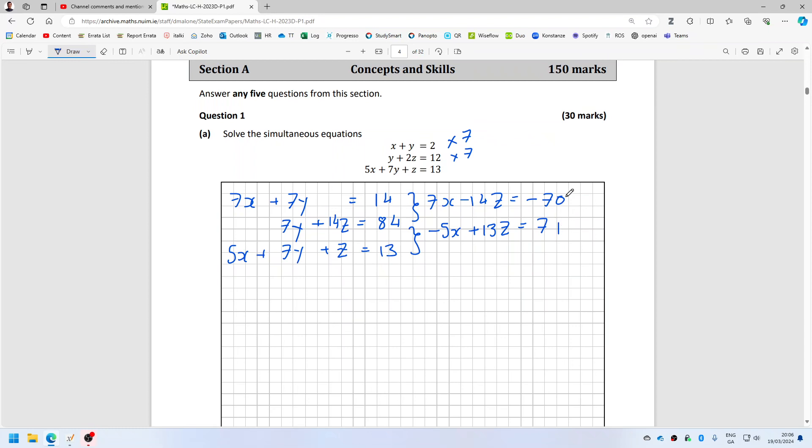Now I could divide this by seven and that would give me... actually, maybe I should multiply it by five. Divide by seven and multiply by five, so that would give me 5x - 10z equals... divide by seven is -10, so that's -50.